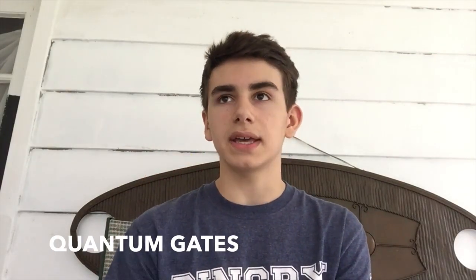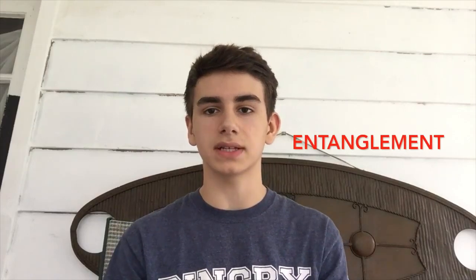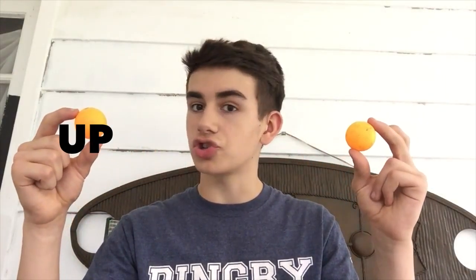Qubits are manipulated through quantum gates, which basically just take in an electron's superposition and output a new one. Another part of putting qubits to their full potential is a quantum property known as entanglement. When qubits are entangled, those superpositions are correlated, such that by measuring one, you can directly deduce properties of the other. This helps limit measurement and maximize probability power in the quantum computer.